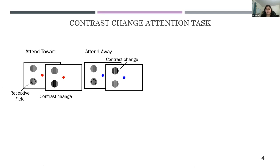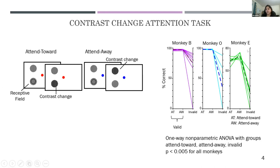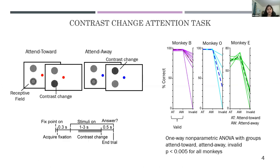To ensure the monkeys truly understand the task and are paying attention to the cued location, we include invalid trials where the contrast changes at the invalid location — performance should drop on these. Indeed, for all three monkeys, solid lines show individual session performance and dotted lines show mean accuracy. All three monkeys perform much better in valid attend-toward and attend-away trials compared to invalid trials.